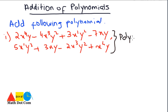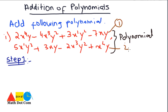Now let's see how you can add them. Step 1: you have to arrange them in ascending or descending order. We will write one polynomial over the other. Descending order means if the powers are 4, 3, 2, 1, we write the highest power first and the lowest at the end.